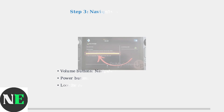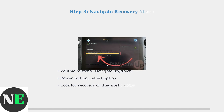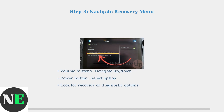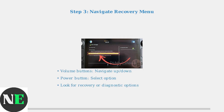Once in Recovery Mode, you'll see a menu that you can navigate using the volume buttons to move up and down and the power button to select options. You'll see a menu similar to this boot manager screen. To summarize: power off completely, hold volume down plus power until you hear the chime, then navigate with volume buttons.